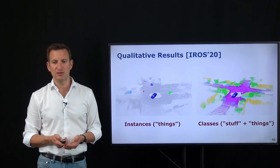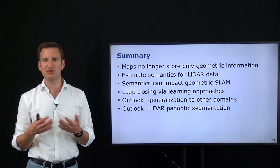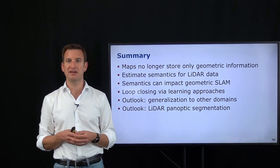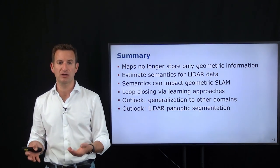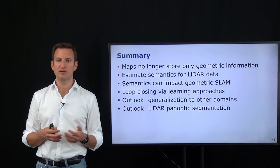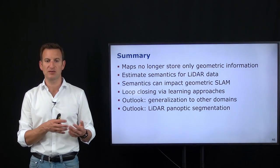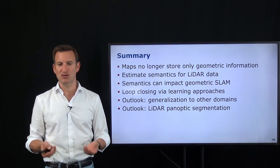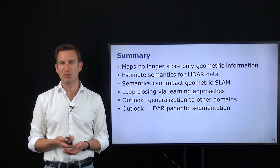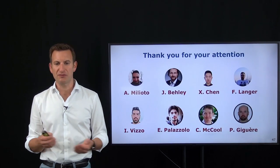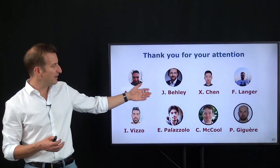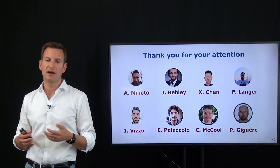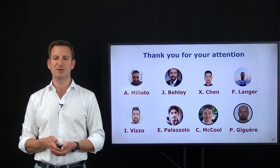This brings me to the end of my talk. I have shown that maps do not need to store only geometric information — we can also estimate semantic information online and integrate it into a mapping system. We looked exclusively at LiDAR-based data to perform this estimation and fuse it in a semantic-geometric estimation approach. I also gave two outlooks: domain transfer generalization and a panoptic segmentation system to be released at IROS this year. I would like to thank my collaborators Andres Miliotto, Jens Behley, Xieyuanli Chen, Ferdinand Langer, Ignacio Viso, Emmanuel Parazzolo, Chris McCool, and Philippe Giguère for their contributions. Thank you very much.